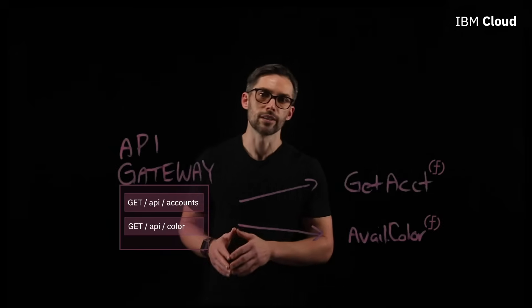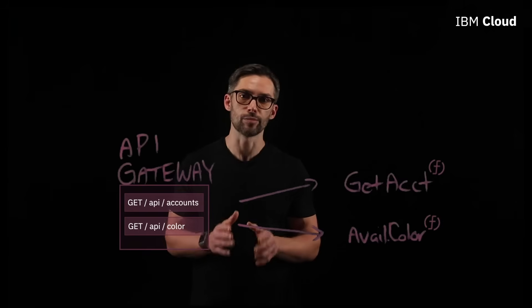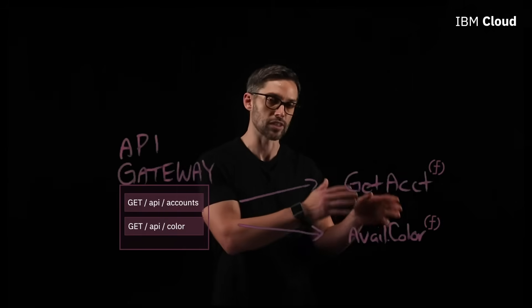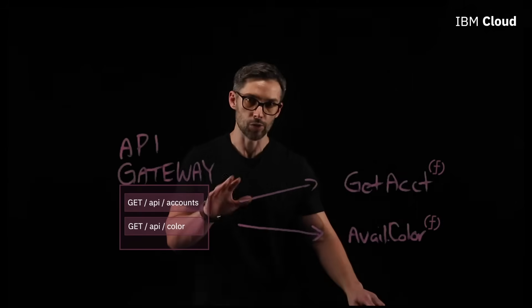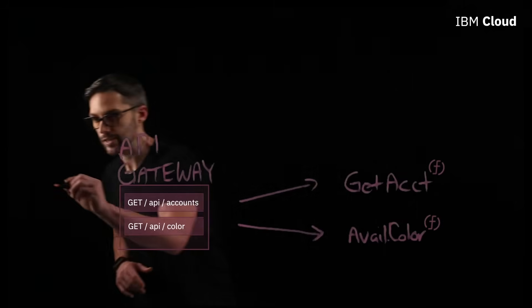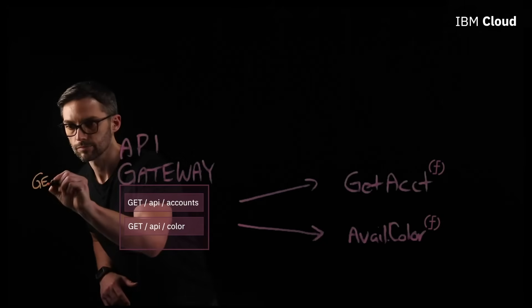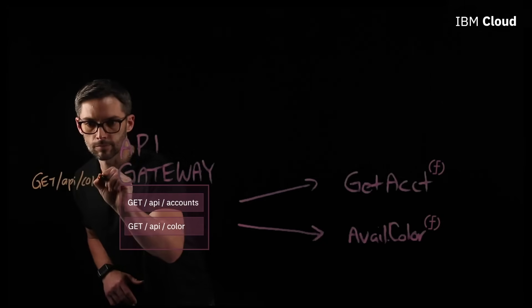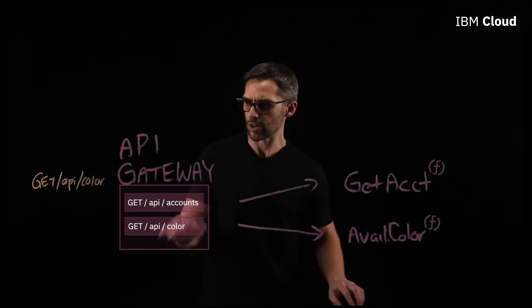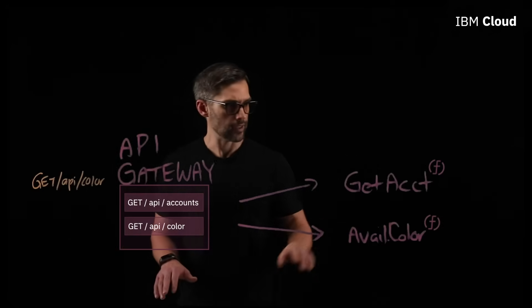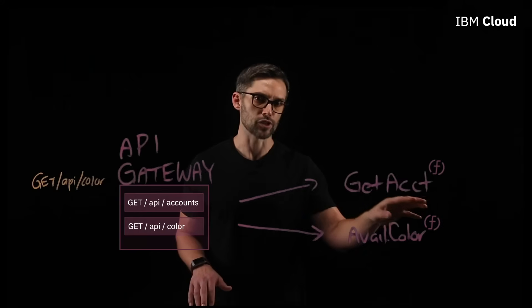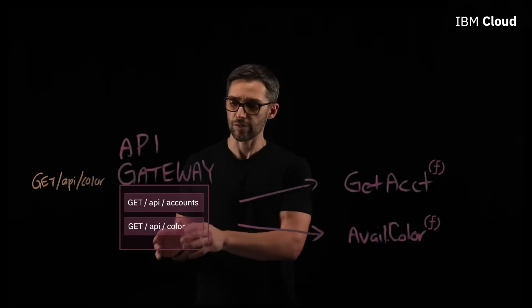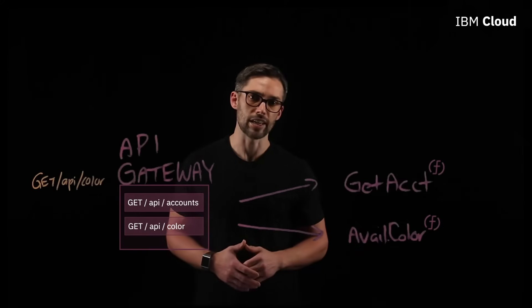So, API gateway, it translates requests to a single endpoint, and then routes it to a different functions as a service function. So, in our case, our user makes requests, right? So, we have get API color. And this API gateway notices requests. And it sees the available color function over here, because it has the available color route within the API gateway.